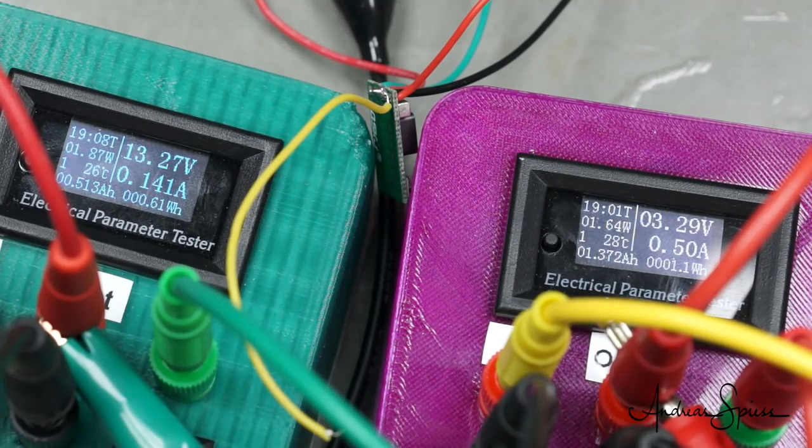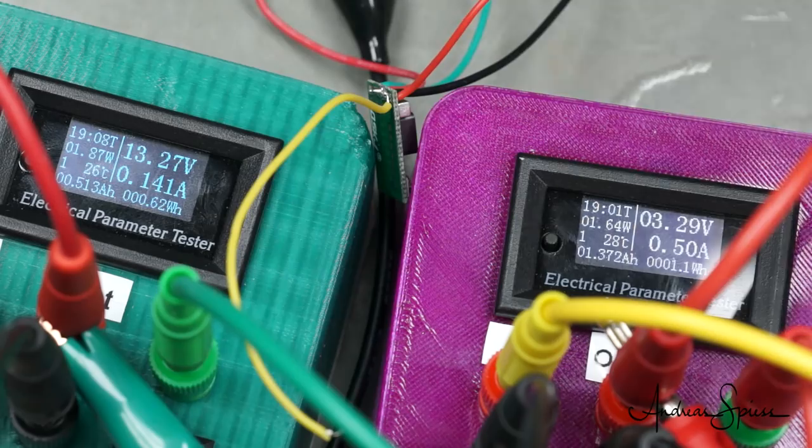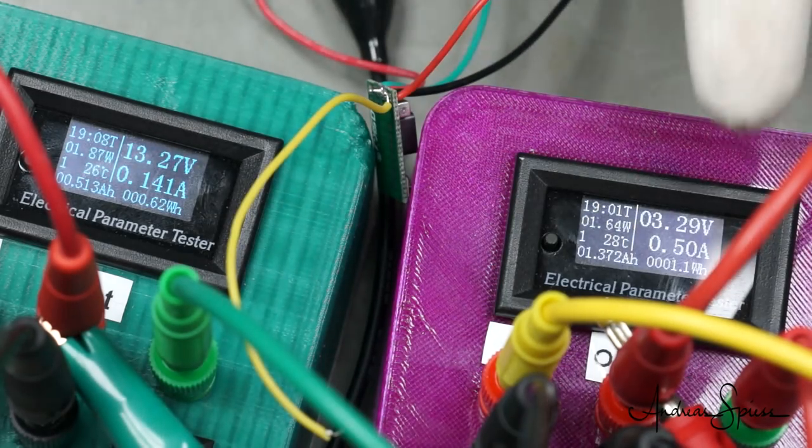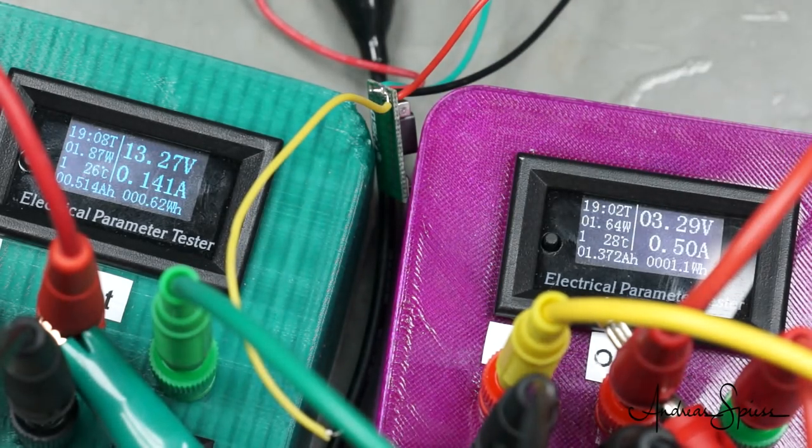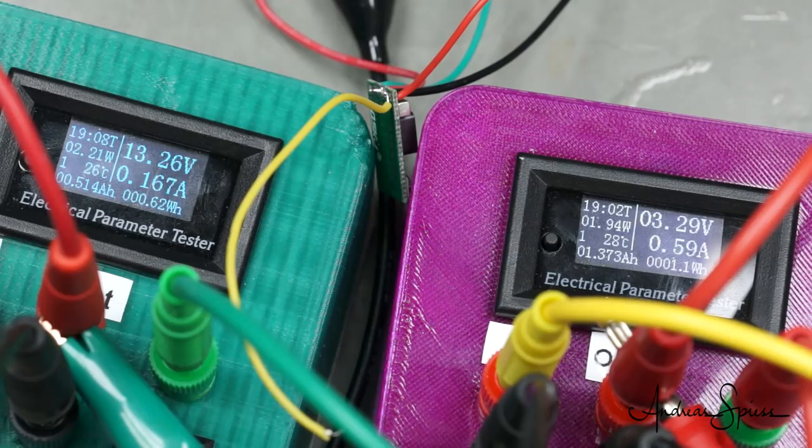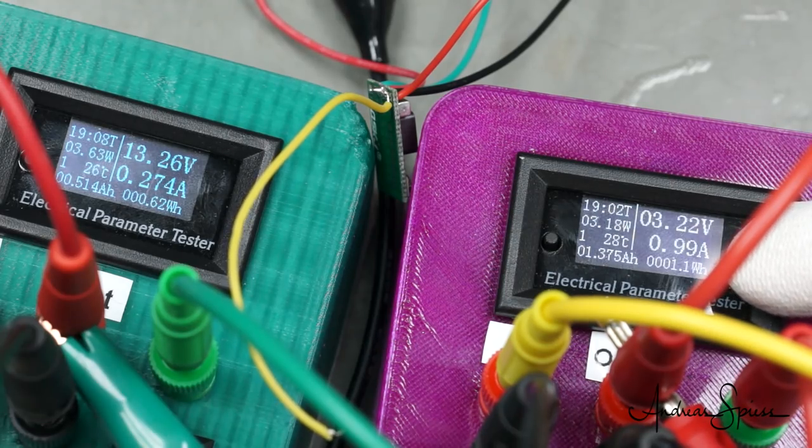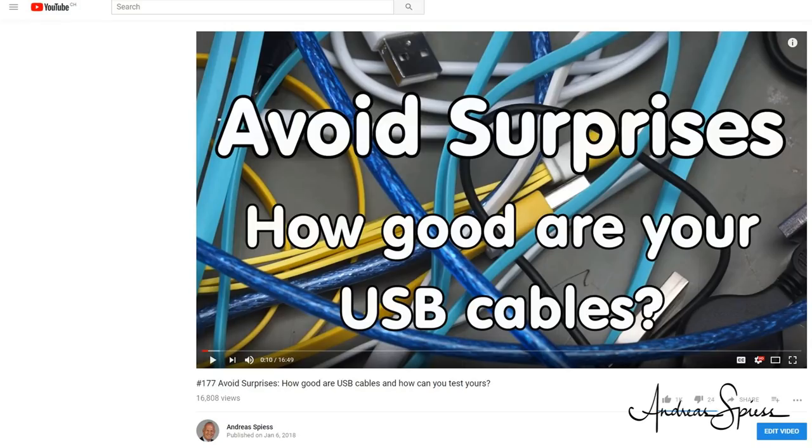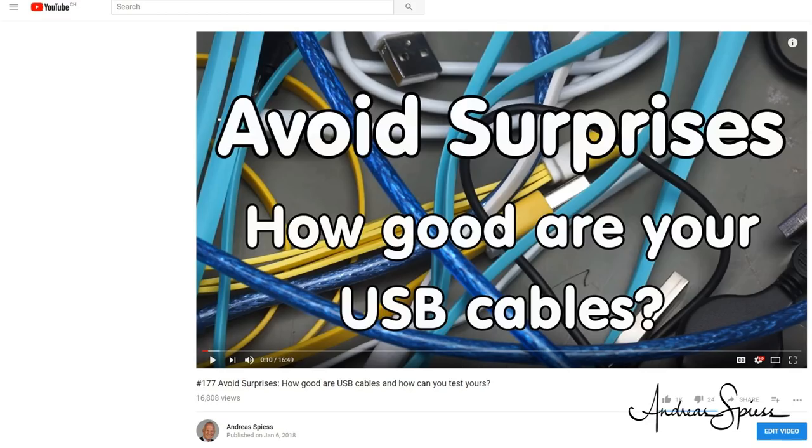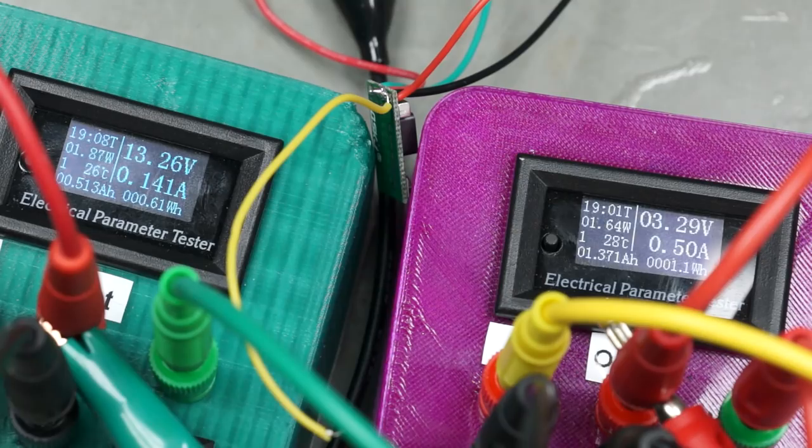We use the same scenario as before. Input 13.3V and output 3.3V at 0.5A. No problem at all. It delivers the 500mA without a sweat. We even can go up to 1A. The voltage drops a bit, but this is mainly because I do not use the 4-wire method shown when I tested the USB cables.